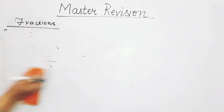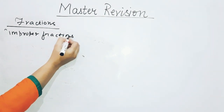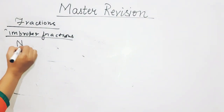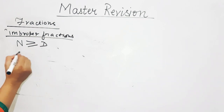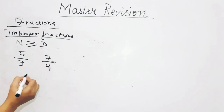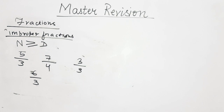Improper fractions are the fractions wherein the numerator is greater than or equal to the denominator. Examples: 5 upon 3, 7 upon 4, 6 upon 3. Also, 3 upon 3 — where numerator equals denominator — is also an improper fraction.